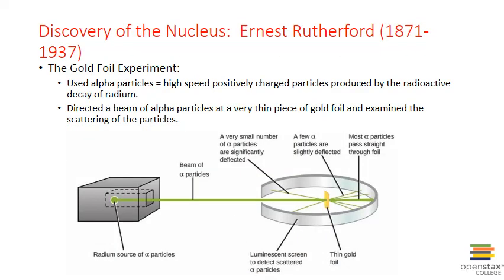The next major evolution in our understanding of the atom was the discovery of the atomic nucleus by New Zealand physicist Ernest Rutherford. Rutherford conducted a famous experiment known as the Gold Foil experiment. It utilized alpha particles — high speed, positively charged particles produced by the radioactive decay of radium. We now know that they are essentially two protons and two neutrons, or a helium ion with a plus two charge. Rutherford directed a beam of alpha particles at a very thin sheet of gold foil and examined how the alpha particles were scattered as they went through the foil.